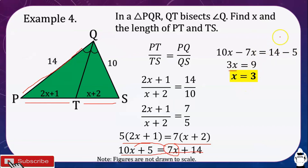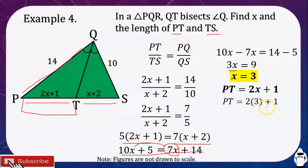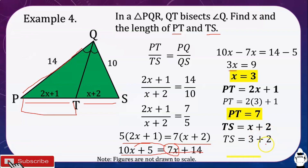Since we found X equals 3, we can now find the lengths of PT and TS. PT equals 2X plus 1: substituting X equals 3 gives 2 times 3 plus 1, so PT equals 7 units. TS equals X plus 2: substituting X equals 3 gives 3 plus 2, so TS equals 5 units. If you have any questions, just type them in the comment section. Keep safe and God bless.